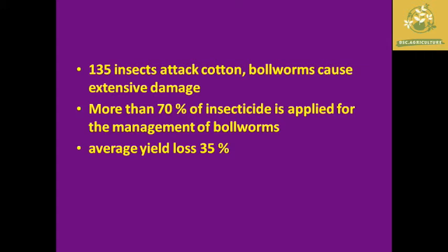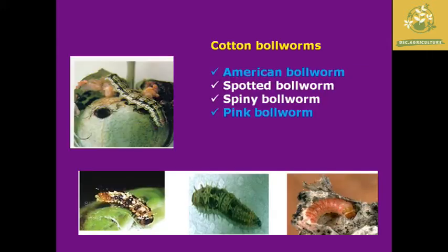Of the 135 insects, the boll worms are the most destructive ones. Because of these boll worms, more than 70% of insecticide is applied in cotton management, and an average yield loss of 35% is mainly caused due to boll worms.